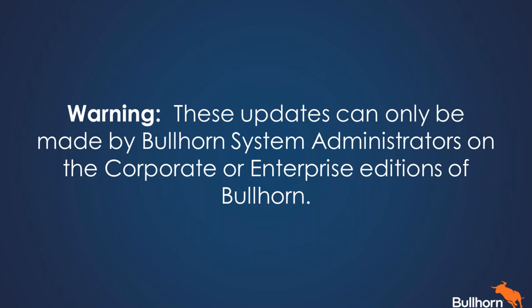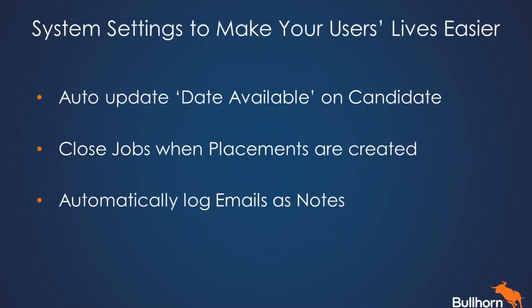Among all the system settings, there are several that can be used to streamline workflow and make things easier for your users. First, we have one called auto update the date available field on your candidate's record when you put them out to work. We also have one that can close job orders when placements are created, and another to automatically log emails as notes. I'm going to go to system settings in Bullhorn to show you how we can make changes to these settings.